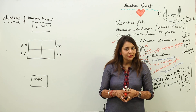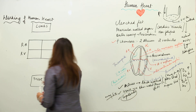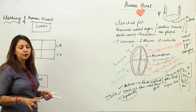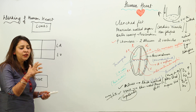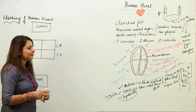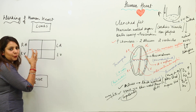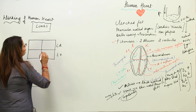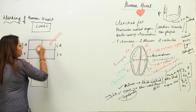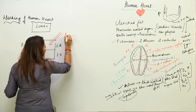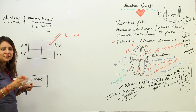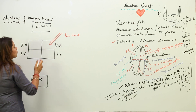We are going to start with the working of the human heart in a flow chart manner. First, pure blood enters into the left atrium. The pure blood starts filling the left atrium, so as the volume of blood increases, pressure increases.